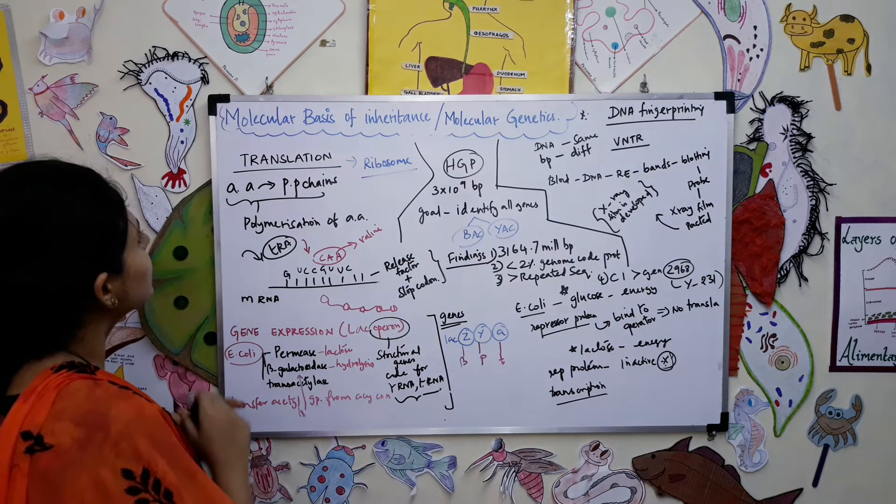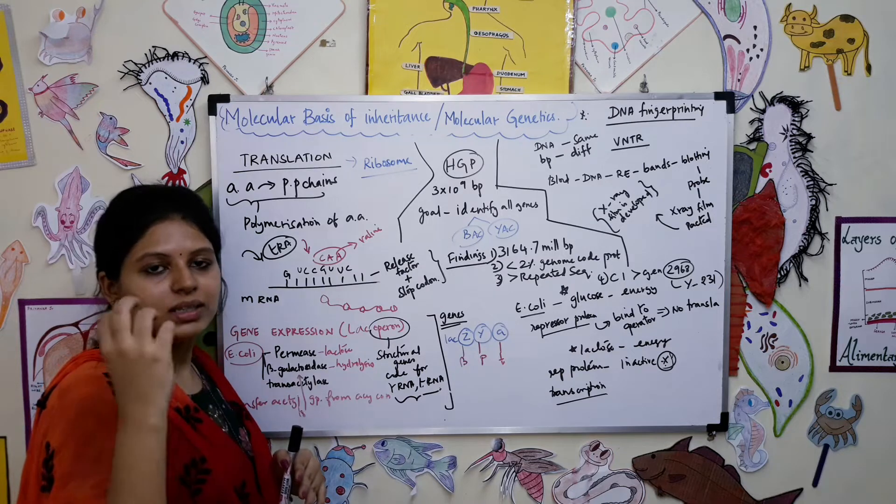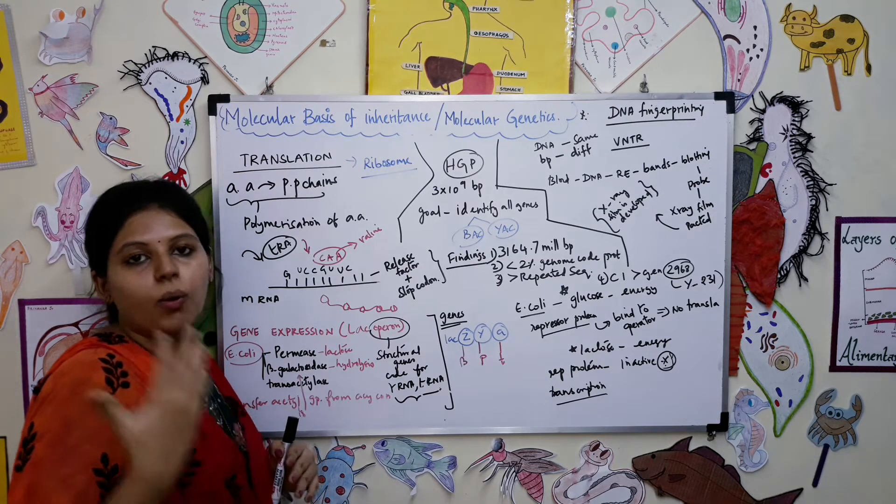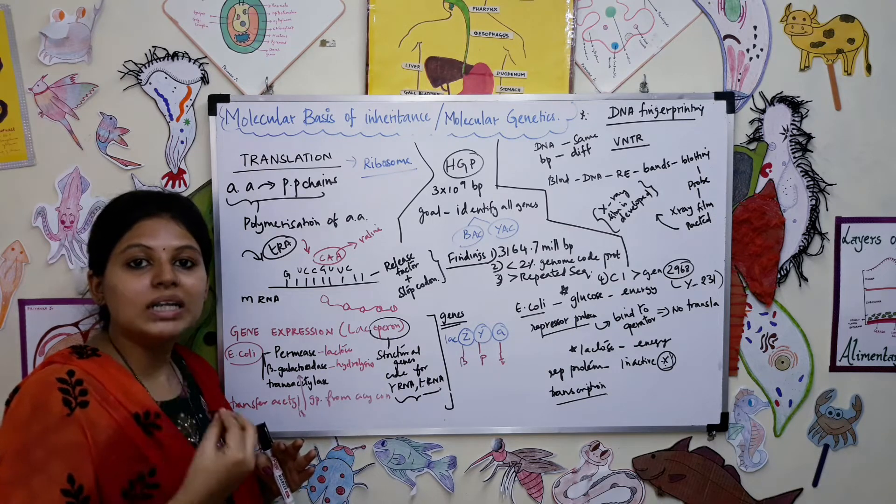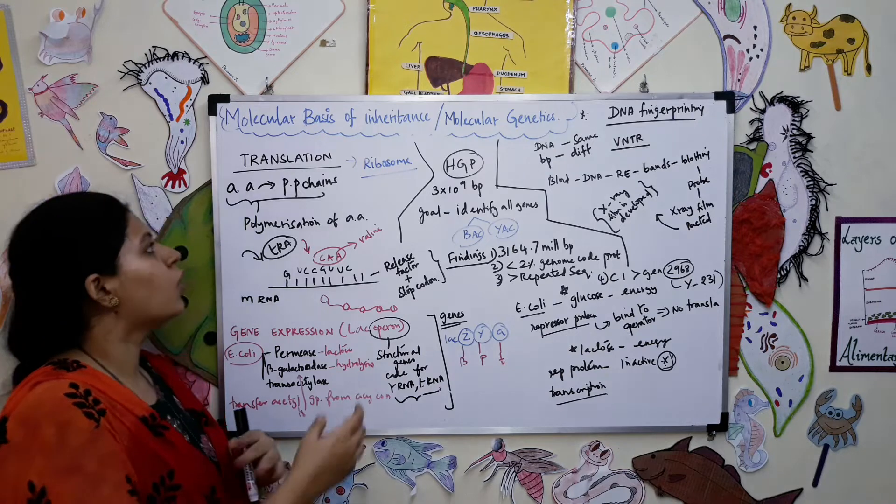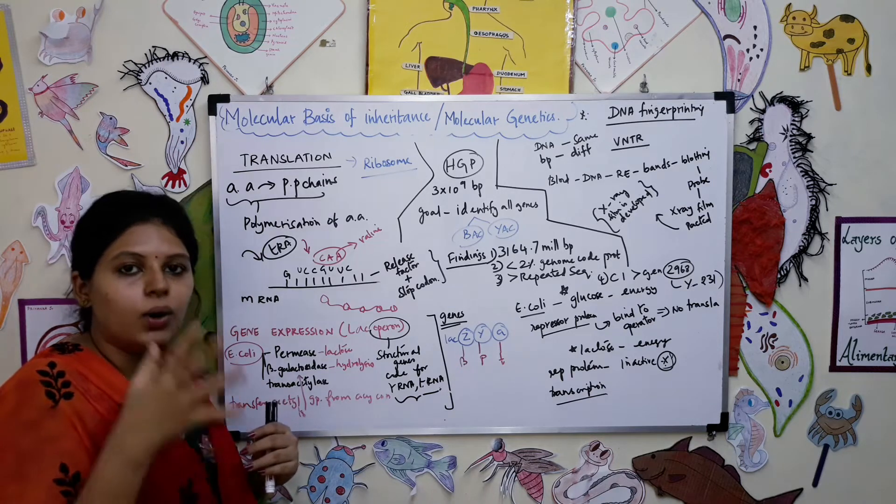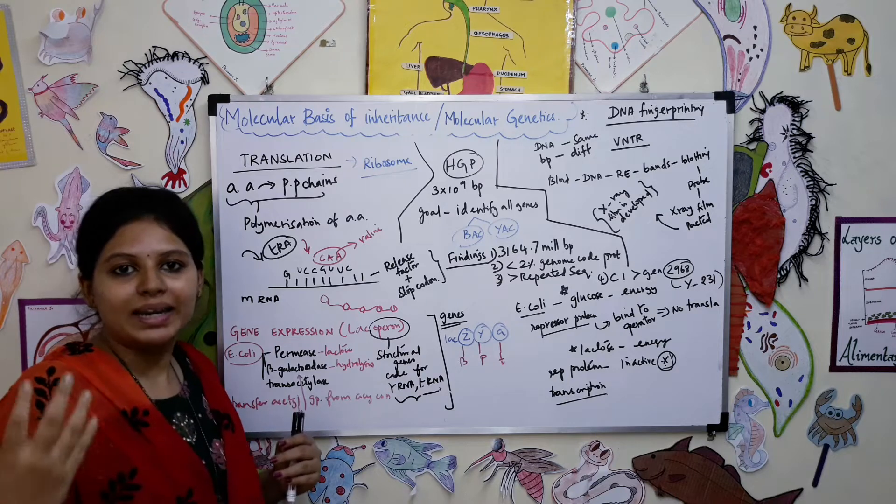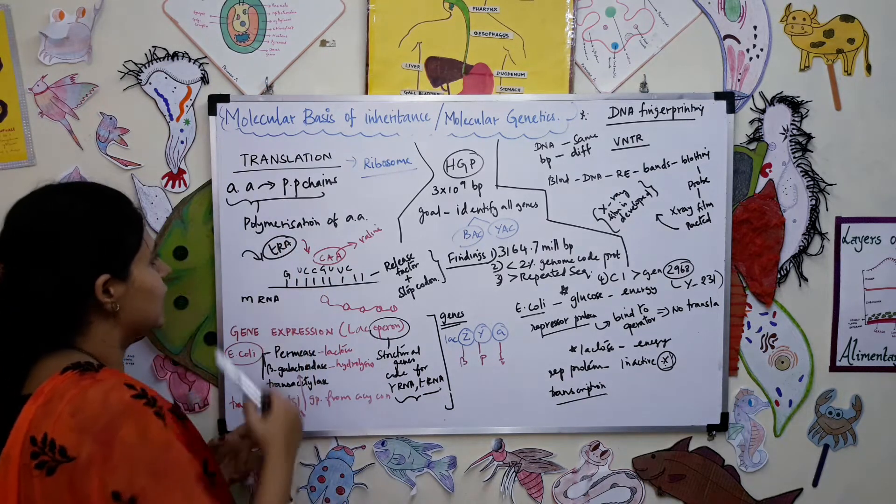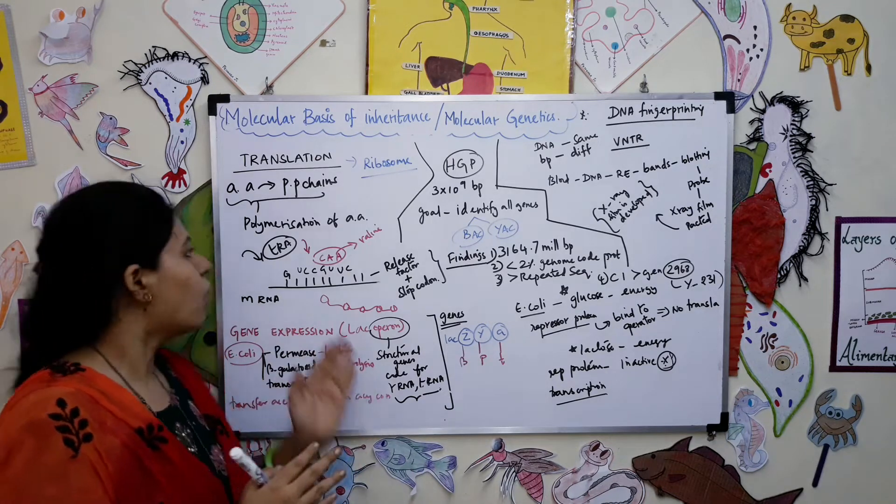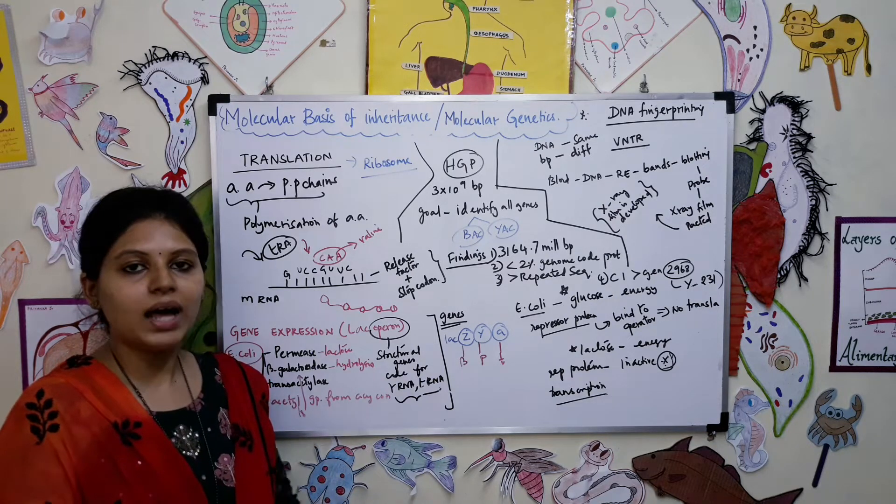So first, what is translation? DNA is replicated, RNA's codons and the coding sequences have been added, and now only one particular process is pending - translation, where proteins are formed. The amino acid chain or strand will eventually form the polypeptide chain which is protein.